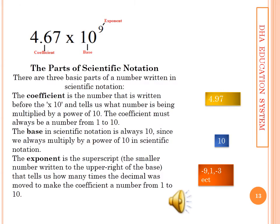Here, I have given you another example. 4.67 multiply 10 power 9. 4.67 is your coefficient. Base is always 10. And power 9 depends on your decimal place. There are three parts of this example. Coefficient is the number that is written before the multiplier 10. And tells us what number is being multiplied by a power of 10. The coefficient must always be a number from 1 to 10. The base is scientific notation always 10 since we always multiply by a power of 10 in scientific notation.